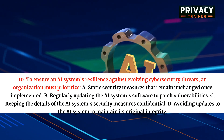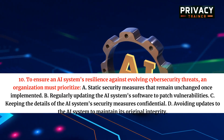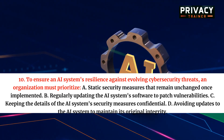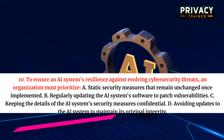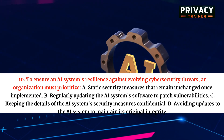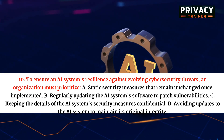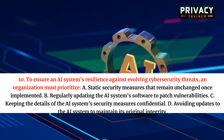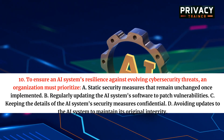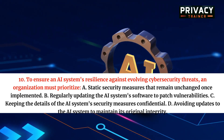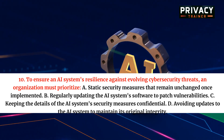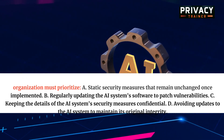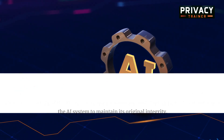Question 10. To ensure an AI system's resilience against evolving cybersecurity threats, an organization must prioritize: A. Static security measures that remain unchanged once implemented. B. Regularly updating the AI system's software to patch vulnerabilities. C. Keeping the details of the AI system's security measures confidential. D. Avoiding updates to the AI system to maintain its original integrity.